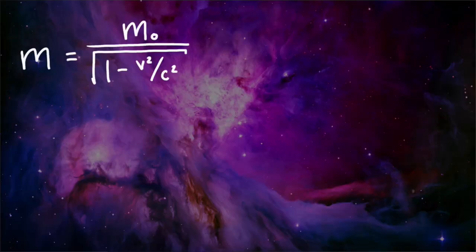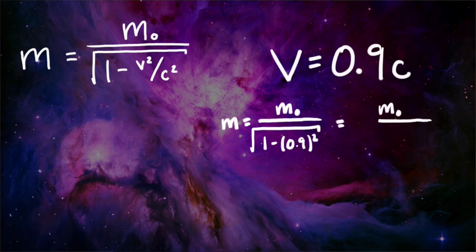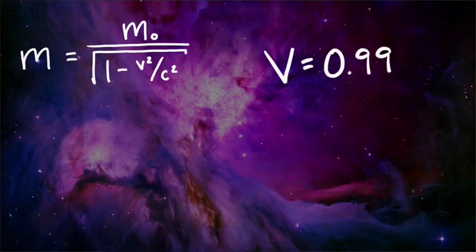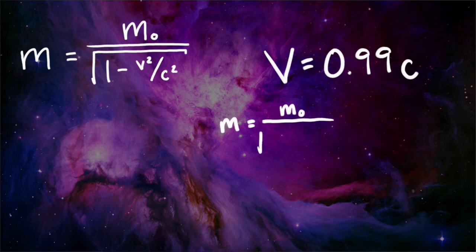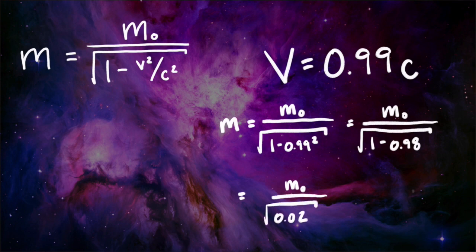As we approach the speed of light, you can see that the mass is increasing. At 90% of the speed of light, mass equals resting mass divided by the square root of 1 minus 0.9 squared, which equals resting mass divided by the square root of 0.19, which is resting mass times 2.294. So at 90% of the speed of light, the mass of an object has almost doubled. At 99% of the speed of light, mass equals resting mass divided by the square root of 1 minus 0.99 squared, which is resting mass times 7.089.